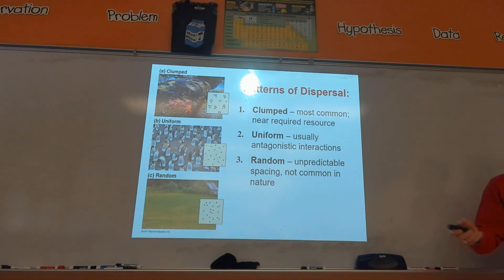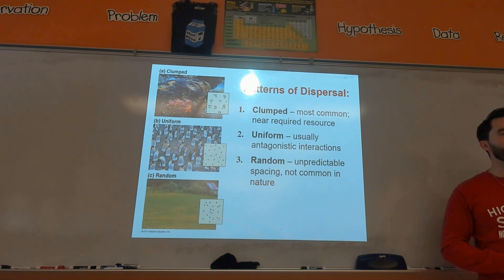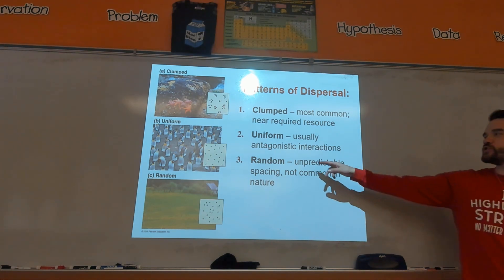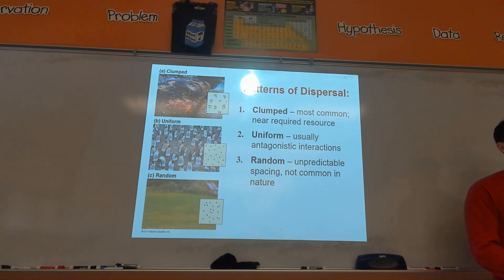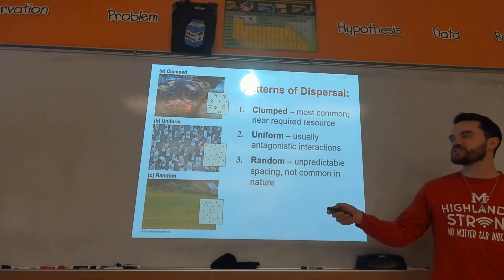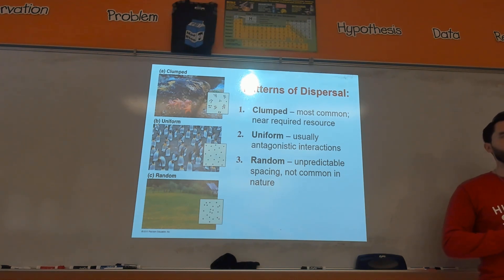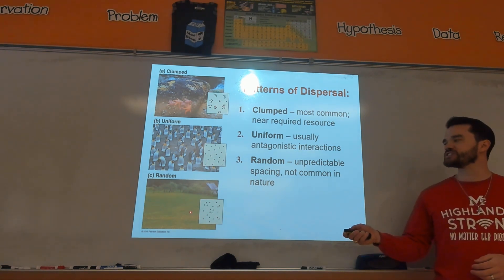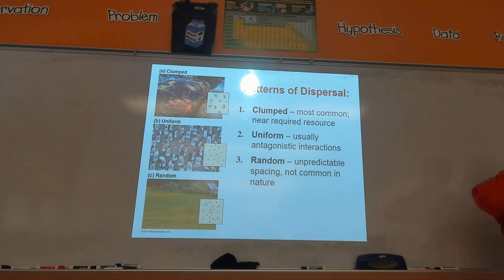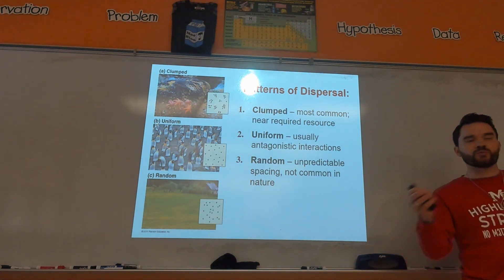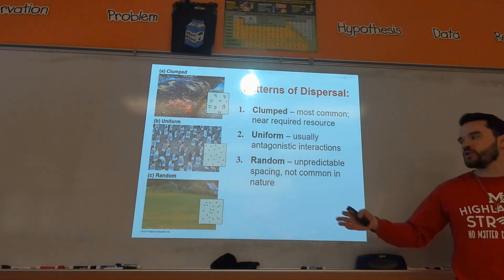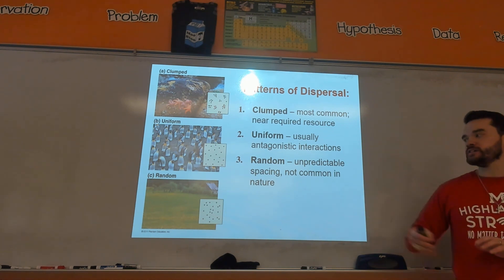Then there's uniform dispersion. Think of it like the Metro — it would be weird if somebody just sat in the same seat as you when there's a completely open seat. The idea of uniform dispersion is antagonistic interactions: I don't want to be near you, so go over there. In ecosystems, there's competition for resources and niches, so it's easier to be spaced out. And then there's random dispersion, which is the least common pattern in nature. You can see it with wildflowers, where wind randomly spreads seeds, leading to a more or less random pattern in the field.